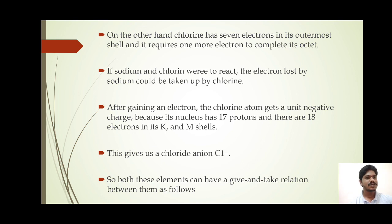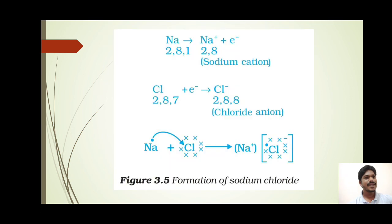Therefore, there is a give-and-take relationship between sodium ion and chloride ion. Sodium becomes Na+ and chlorine becomes Cl-. You can see the formation of sodium chloride: sodium loses one electron and becomes a sodium cation, and chlorine accepts that electron and becomes a chloride ion by the transfer of these electrons.